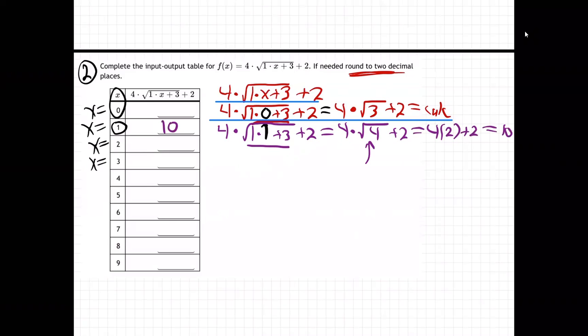So again, just hit the buttons on your calculator. You don't have to do it like I did. Just hit the buttons on your calculator: 4 times the square root of 4 plus 2, and it'll come out 10. And then you just keep going. Just plug each of those numbers in one at a time. So it's kind of a tedious problem. You've got to figure out all of those values one at a time. Let me do one more.